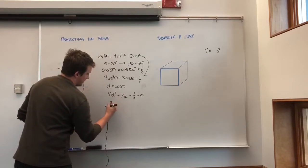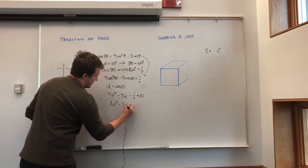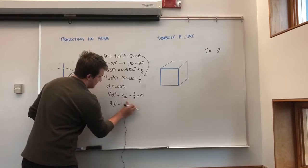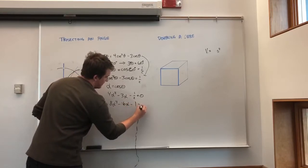we're going to get another polynomial here. Here, 8 alpha cubed minus 6 alpha minus 1 equals 0.